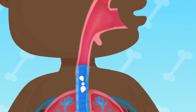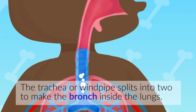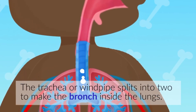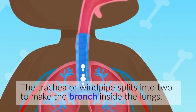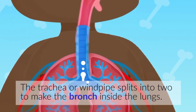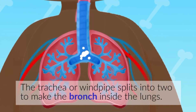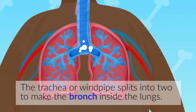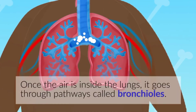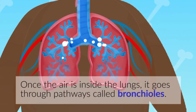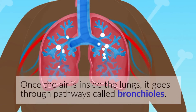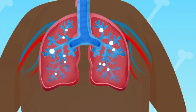Then the air travels down the trachea, or windpipe, which splits into two to make the bronchi inside the lungs. Once the air is inside the lungs, it goes through a pathway called the bronchioles.